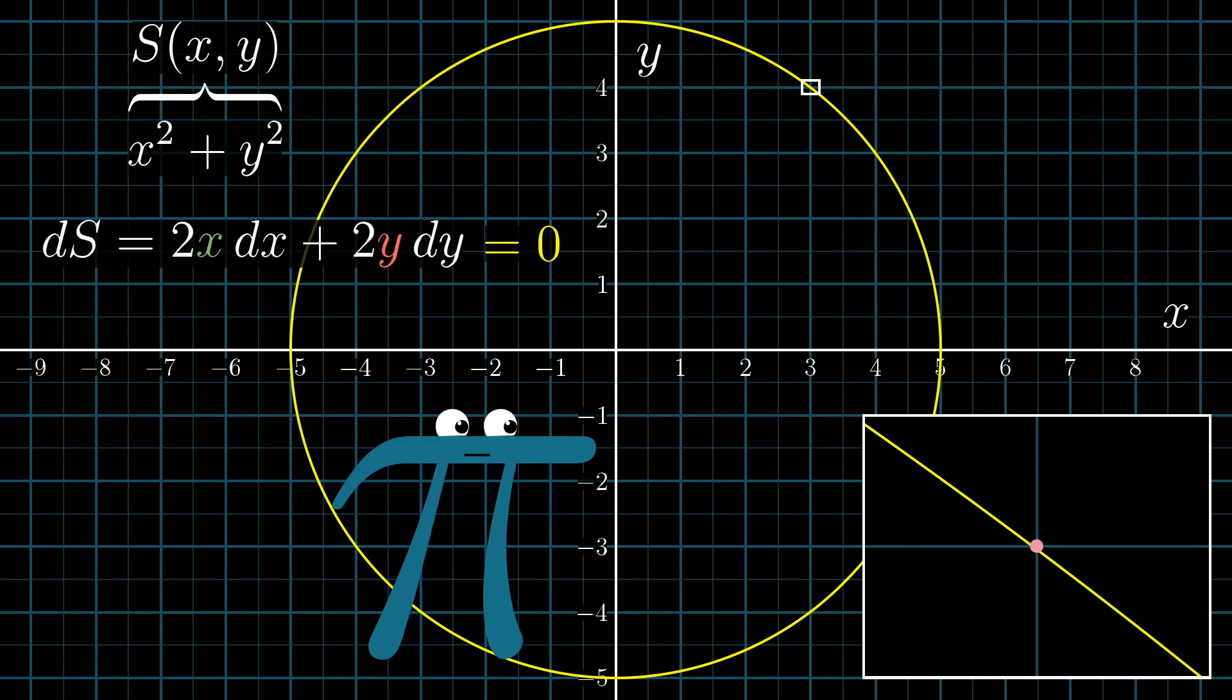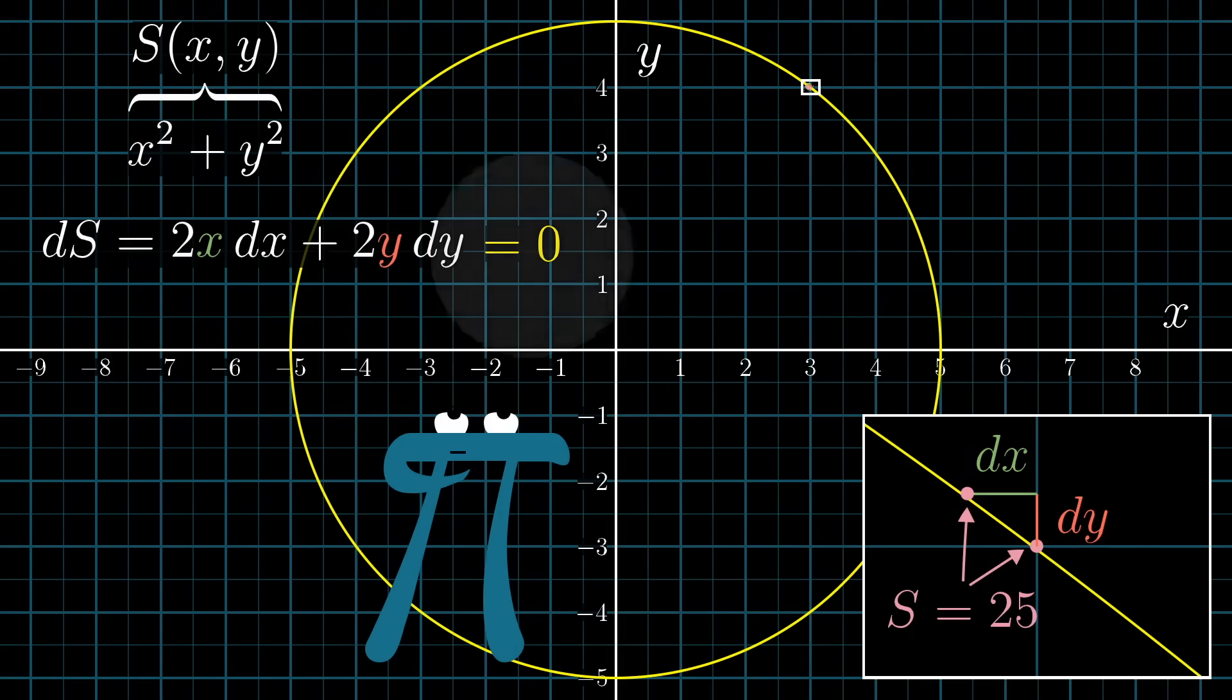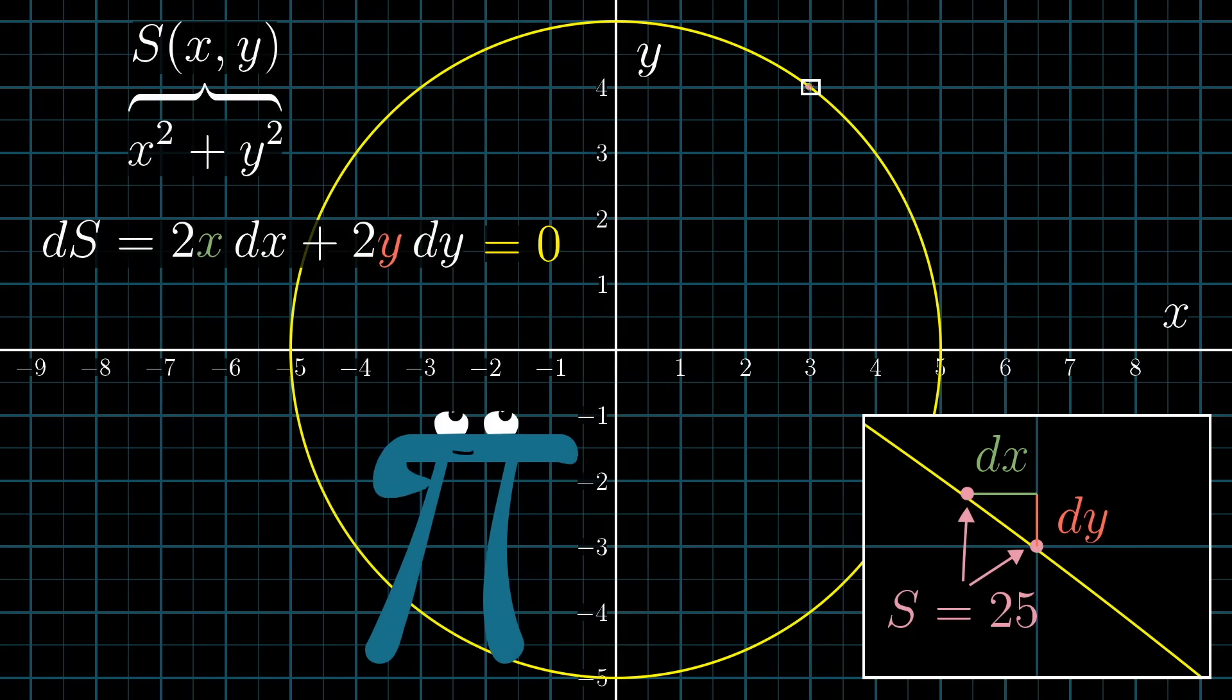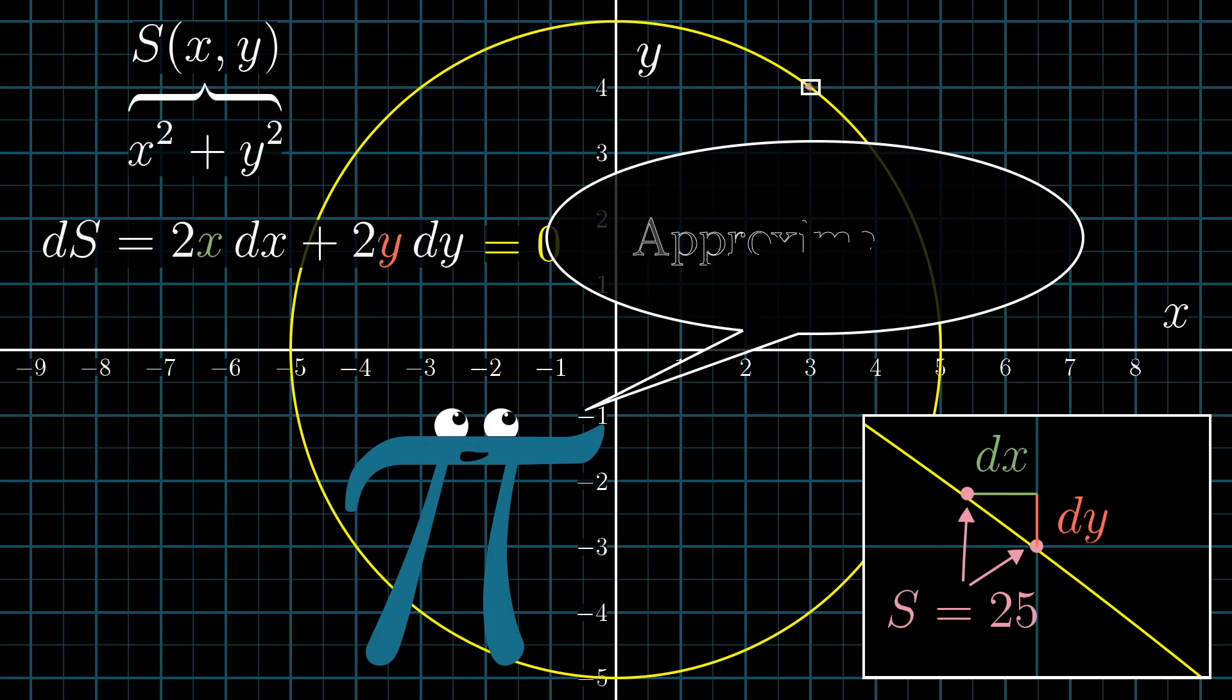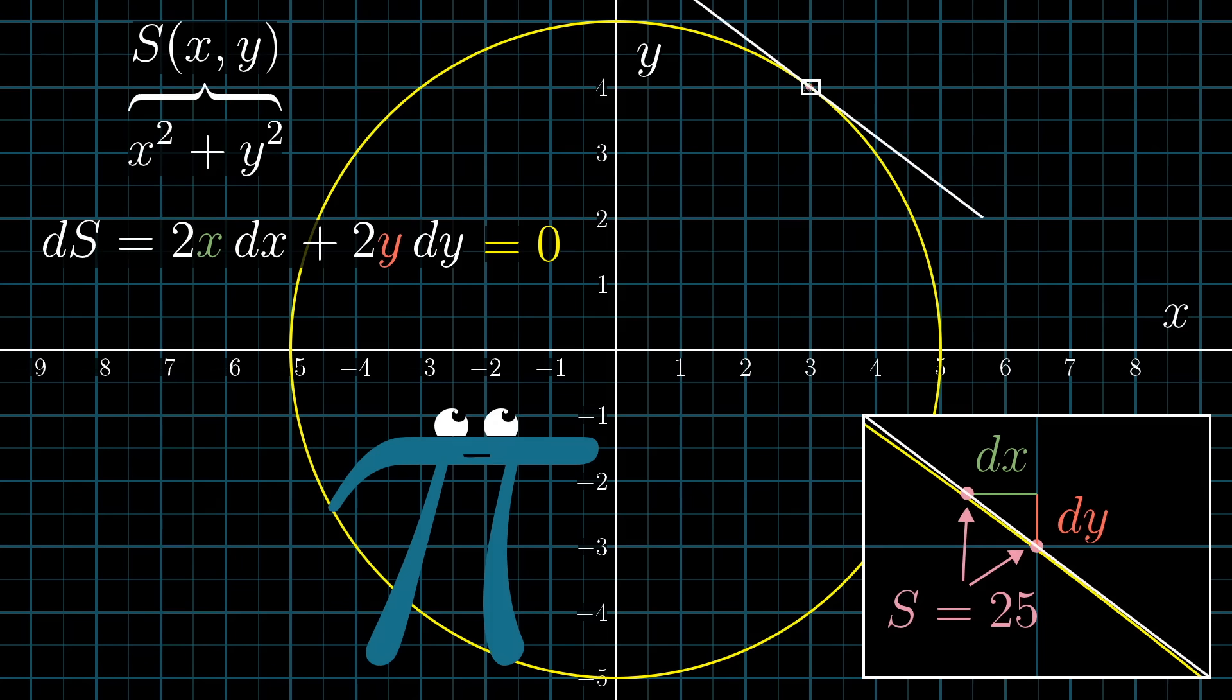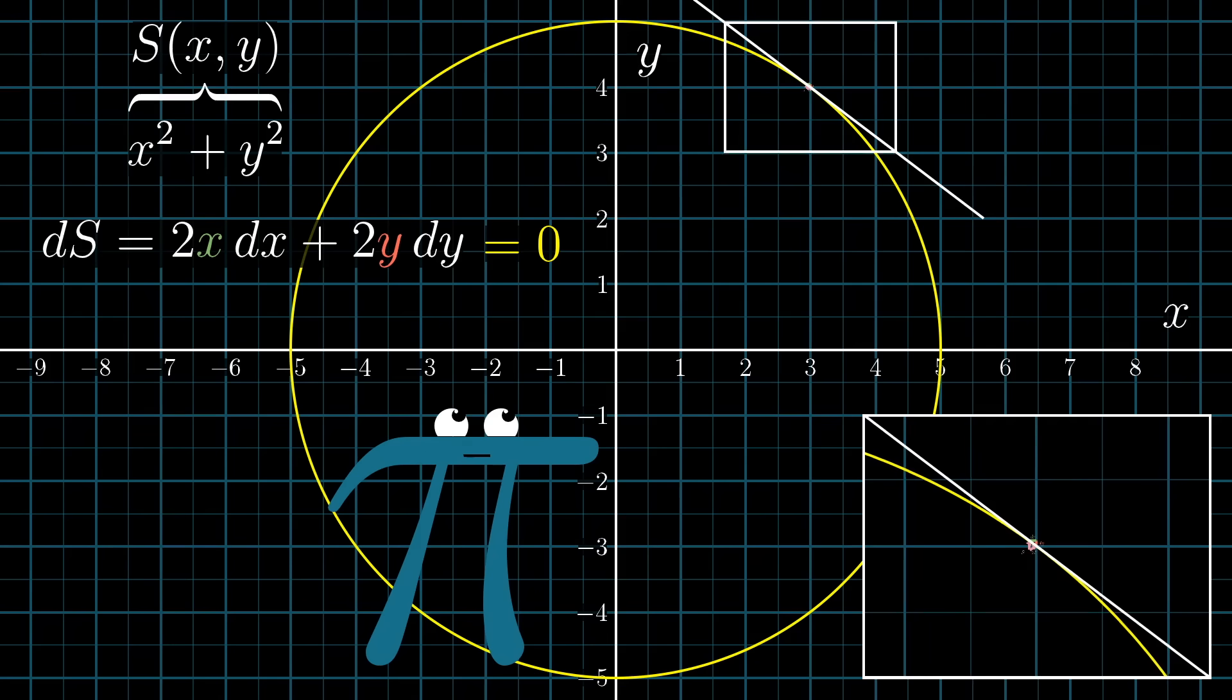The key point here is that when you restrict yourself to steps along the circle, you're essentially saying you want to ensure that this value of S doesn't change. It starts at a value of 25, and you want to keep it at a value of 25. That is, dS should be 0. So setting the expression 2x dx + 2y dy equal to 0 is the condition under which one of these tiny steps actually stays on the circle. Again, this is only an approximation. Speaking more precisely, that condition is what keeps you on the tangent line of the circle, not the circle itself. But for tiny enough steps, those are essentially the same thing.